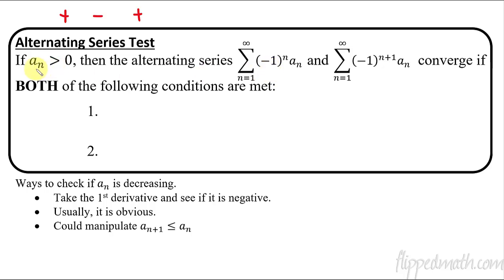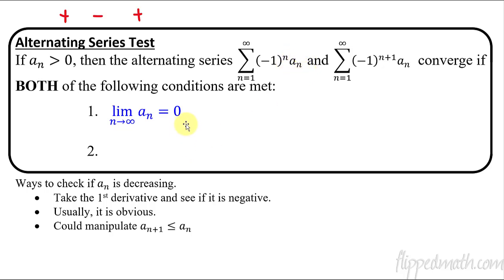We get some kind of function that we say is positive — so if a(n) is positive, and you're multiplying it by an alternating number, positive, negative, positive, negative — that alternating piece means the series is going to converge if two conditions are met. The first condition is that the limit, as n approaches infinity, of a(n) equals zero. If the limit doesn't equal zero, we can't say that it converges.